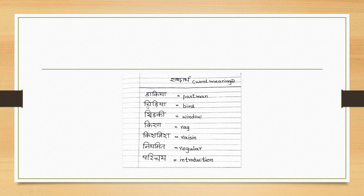Chidiyya — Bird. Khidki — Window. Kiran — Ray. Kishmish — Raisin. Niyamith — Regular. Pairijai — Introduction.